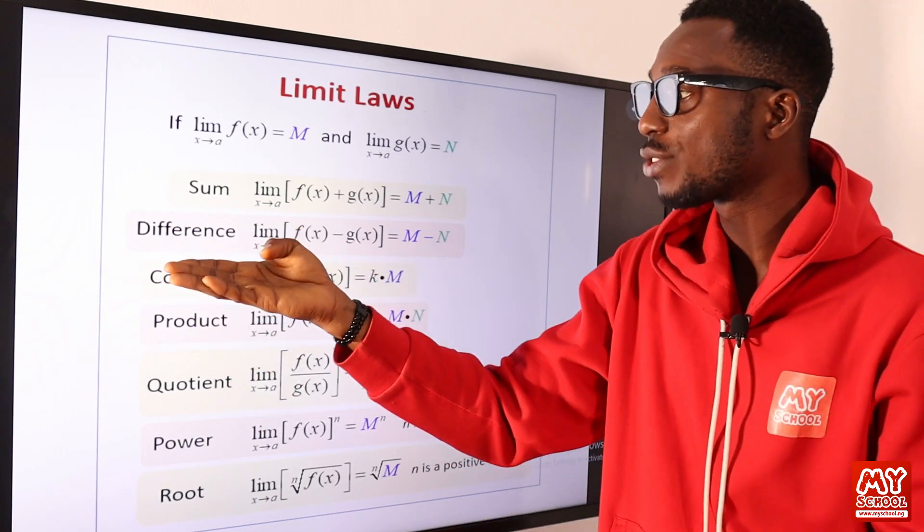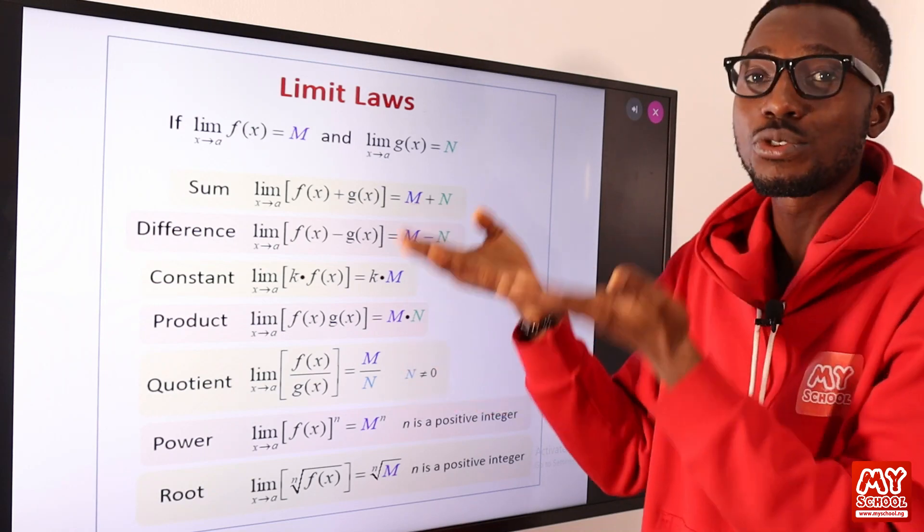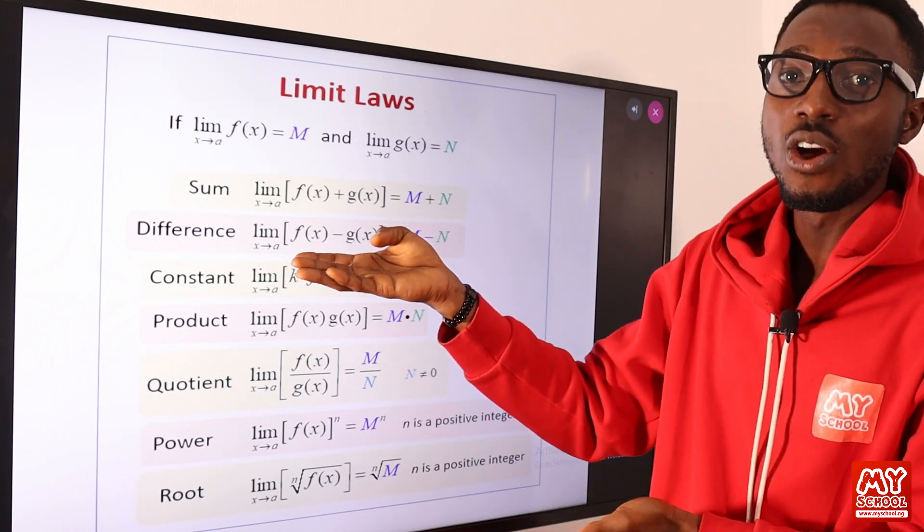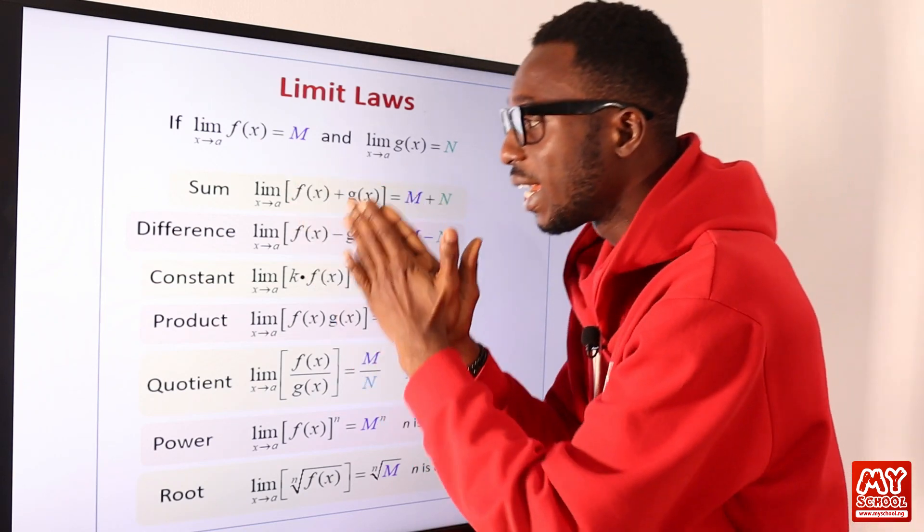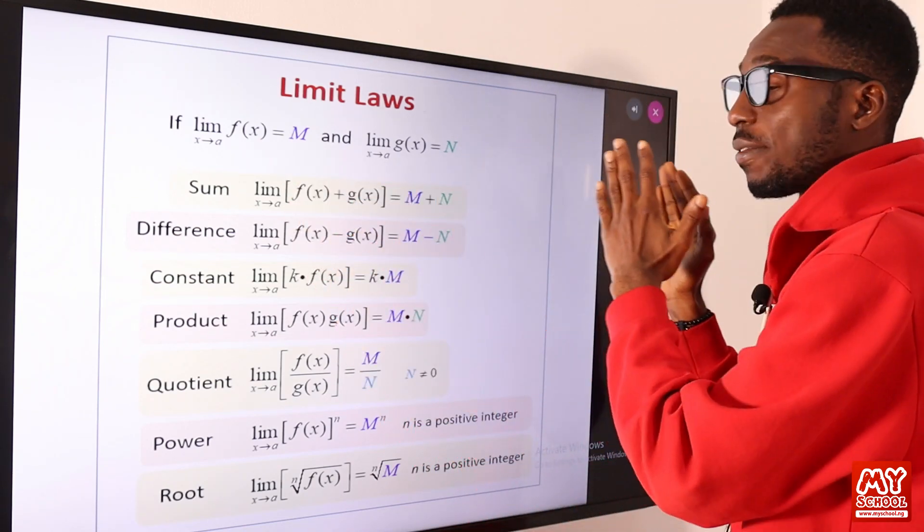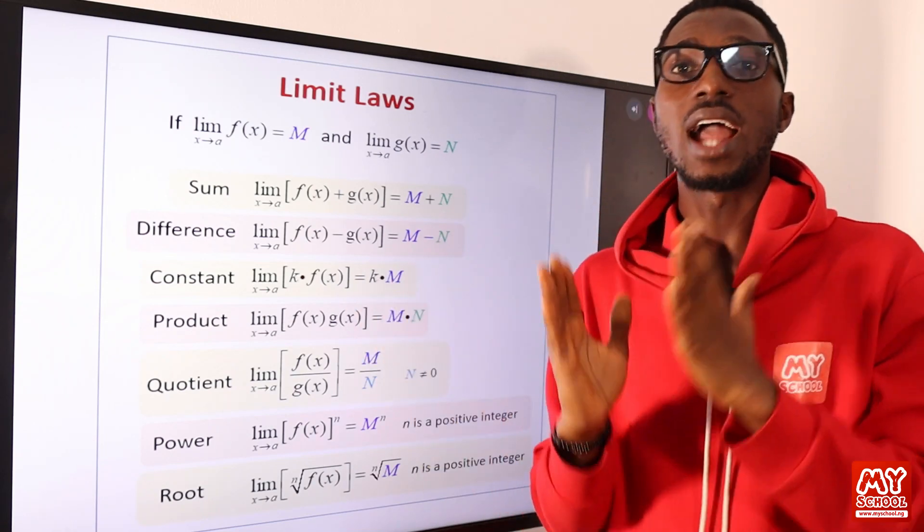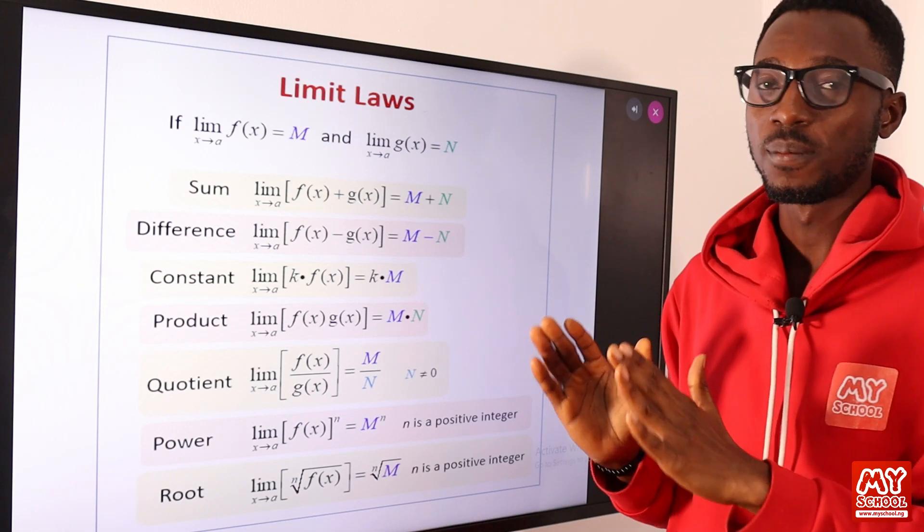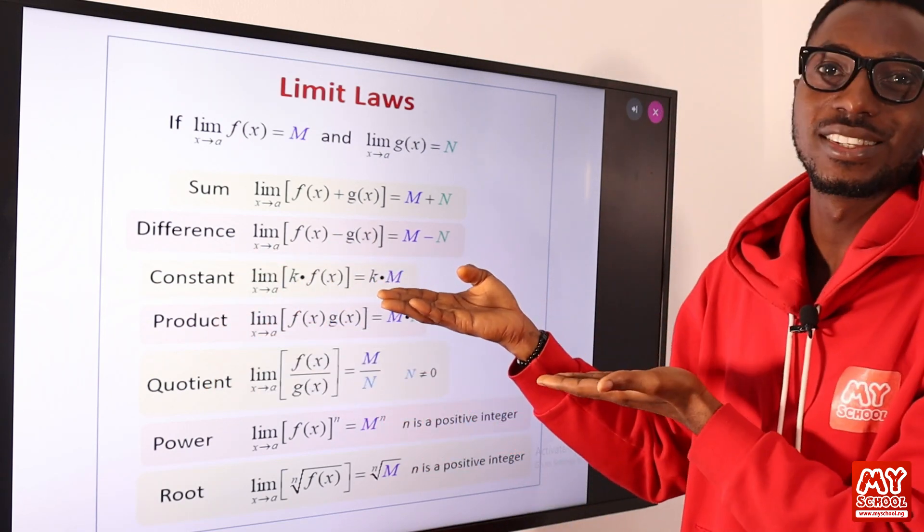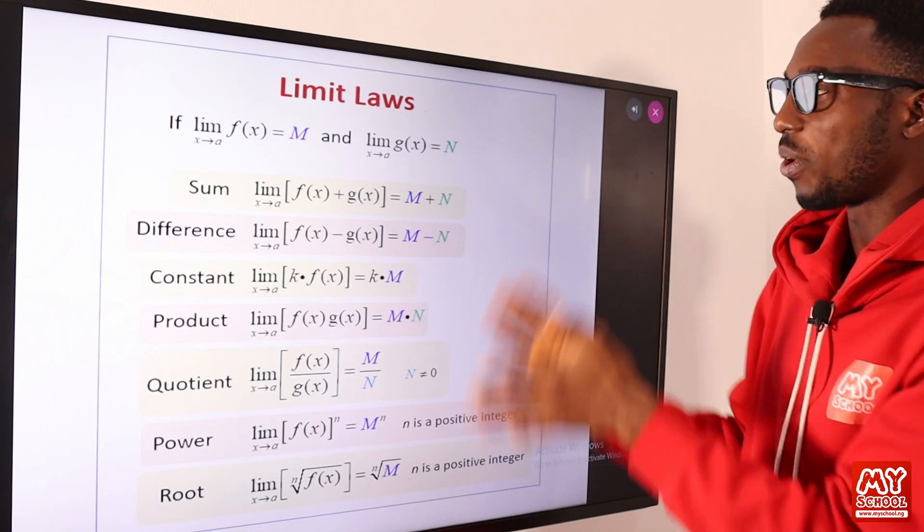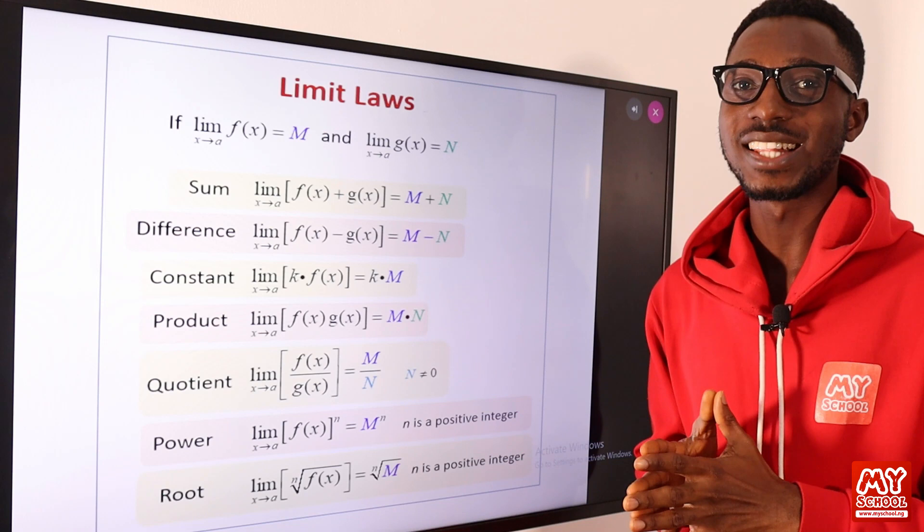The difference of limits of these two functions is still equal to the difference of their respective functions. As you are bringing them together, you are going to get a specific value. Even when you sort them out one after the other and you still match them, you still get the same value. The limit of a constant is still a constant.